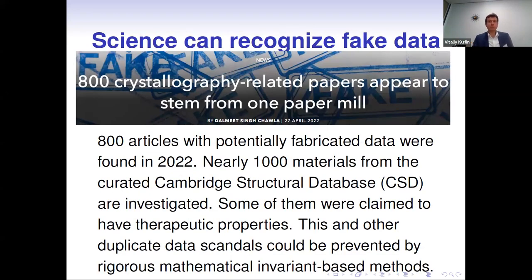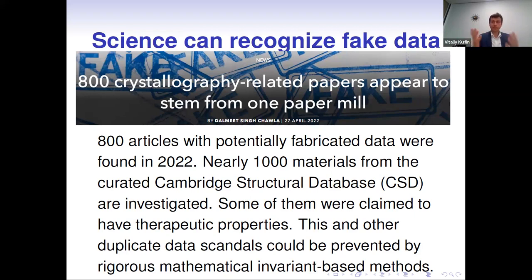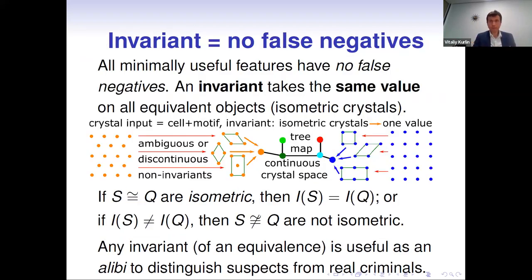As one more motivation: even the Cambridge Structural Database is investigating nearly one thousand materials that came from a so-called paper mill. That's why it's important to understand whether we have different crystal structures and how much they differ. To distinguish crystal structures up to an equivalence relation, mathematicians use the concept of an invariant — in applied sciences called descriptors or features.